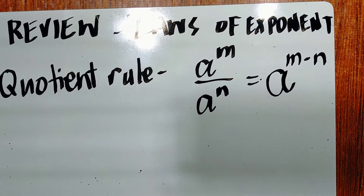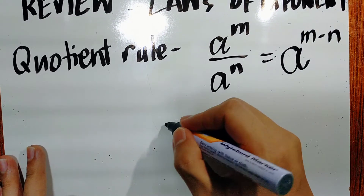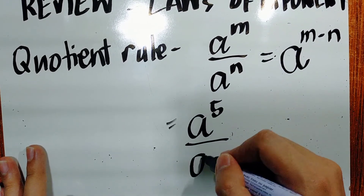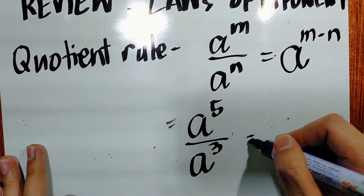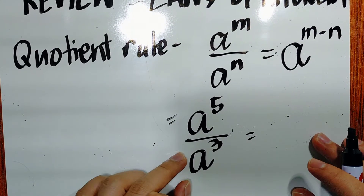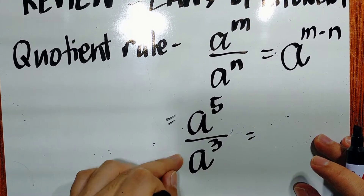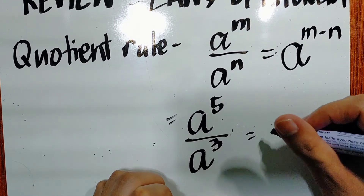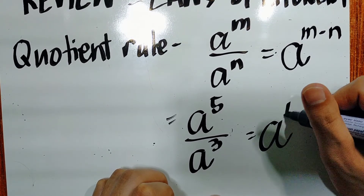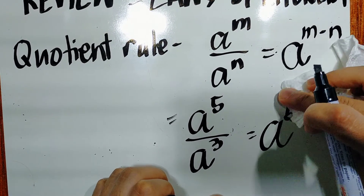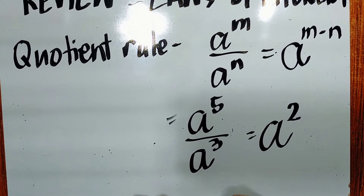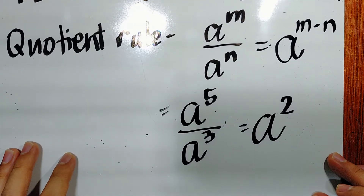For example, we have a raised to 5 over a raised to 3. Since both base values are 1, we keep the variable a. The exponent is 5 minus 3, which equals 2. So the answer is a raised to 2.